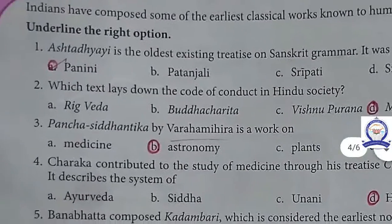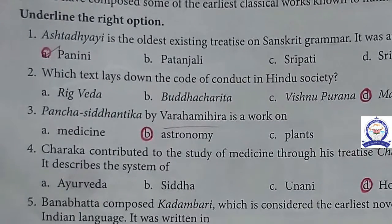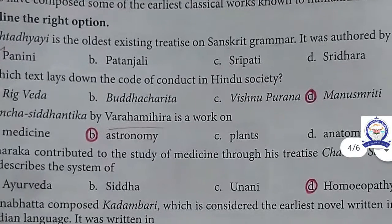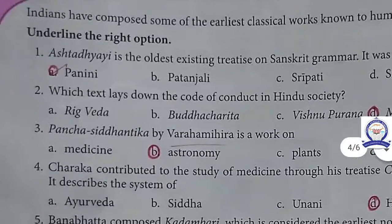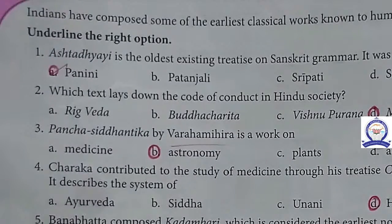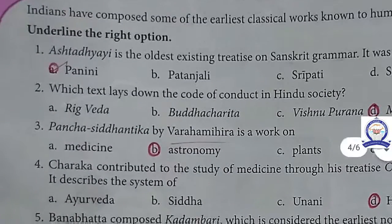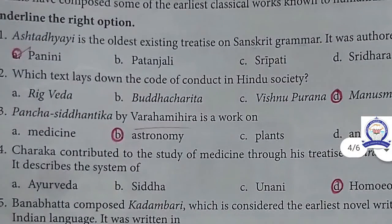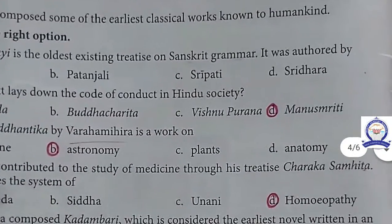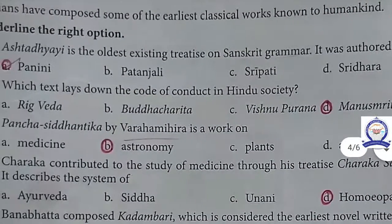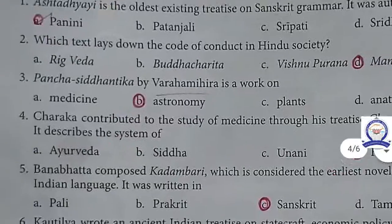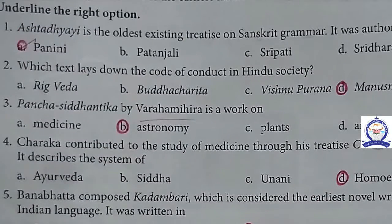The next task is Ancient Works. Which texts lay down the code of conduct for Hindu society? Manusmriti. The second one: Ashtadhyayi is the oldest existing treatise on Sanskrit grammar, authored by Panini. It is considered one of the world's greatest grammars.